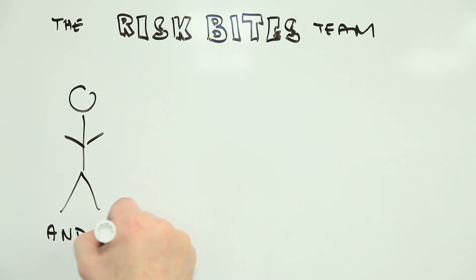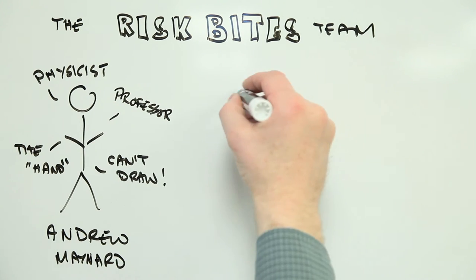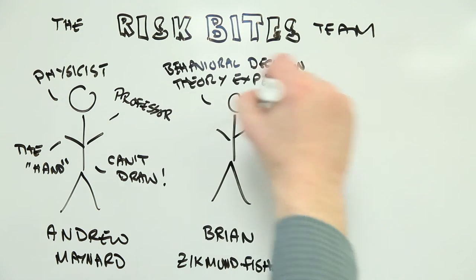My name is Andrew Maynard, and I teach at the University of Michigan. I also do research on the risks and benefits of new technologies. I'm a bit of a geek, so expect plenty of hardcore science here.